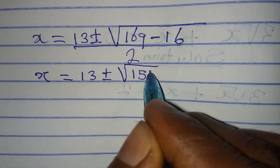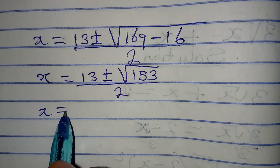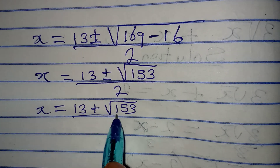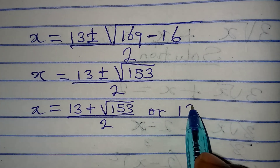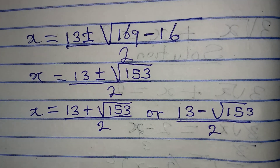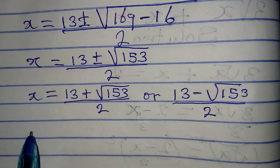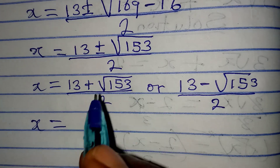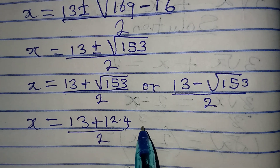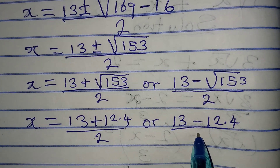So x = (13 + √153) / 2 or x = (13 - √153) / 2. For decimal answers, √153 ≈ 12.4, giving us x = (13 + 12.4) / 2 or x = (13 - 12.4) / 2.